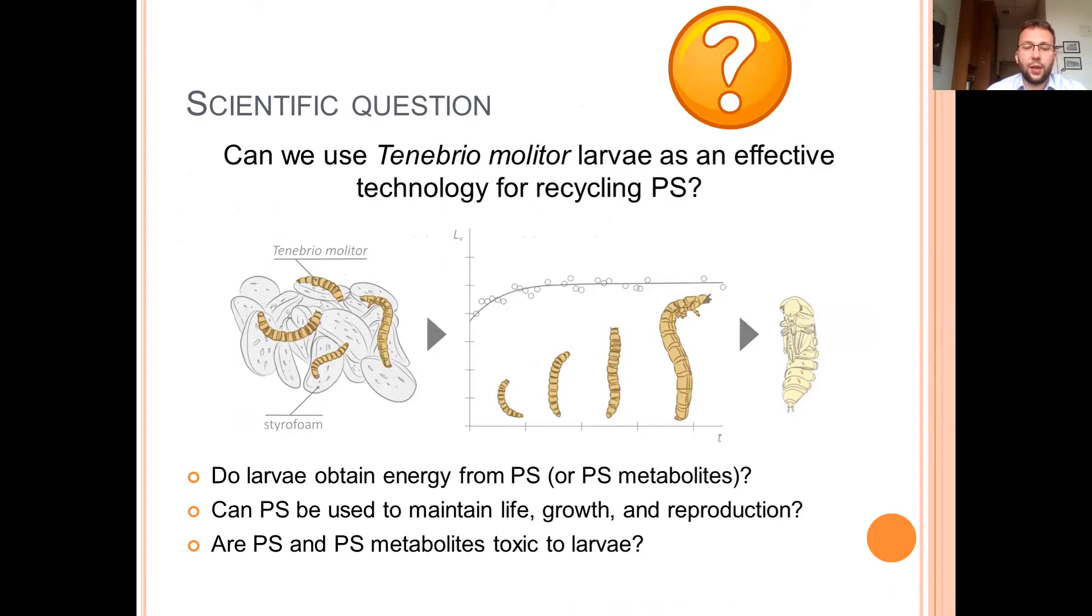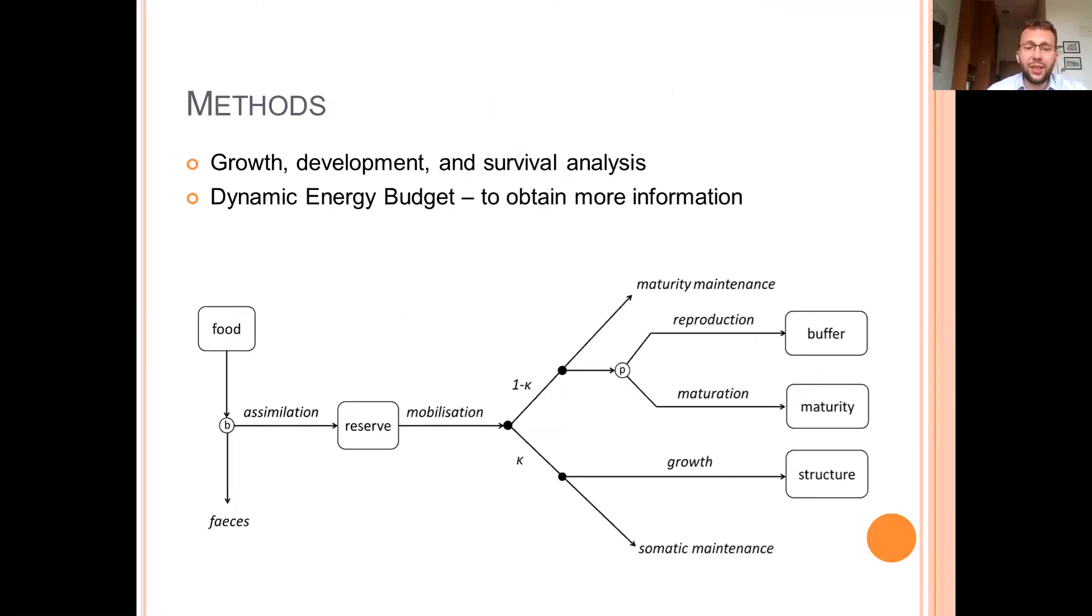And therefore we ask a question: If we are able to use larvae as an efficient technology to utilize PS wastes. So we basically wanted to know what is going on with larvae. Why they survive? Are they using PS as a source of energy? And can some PS metabolites act toxic?